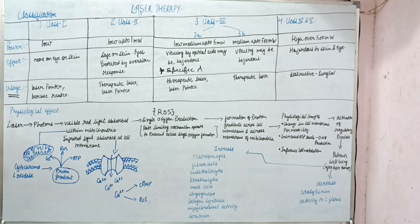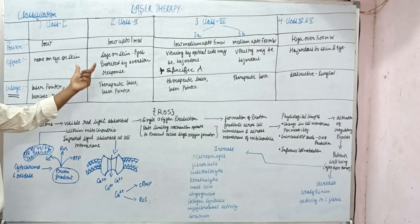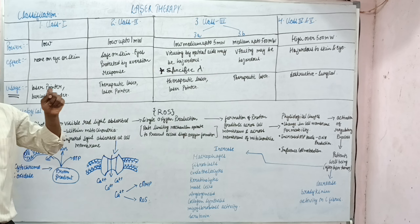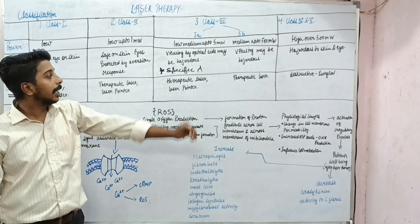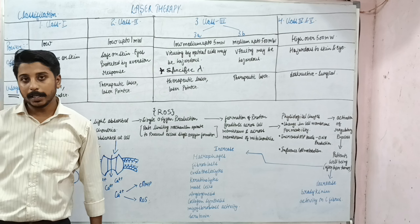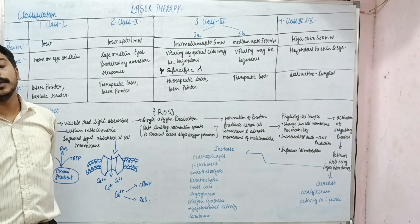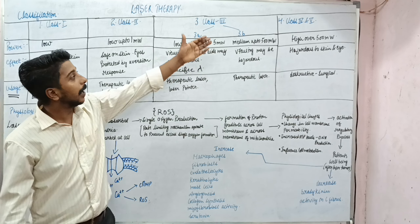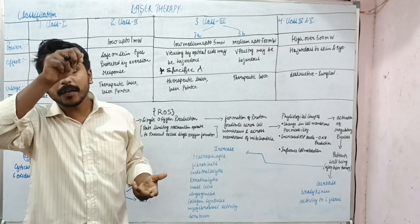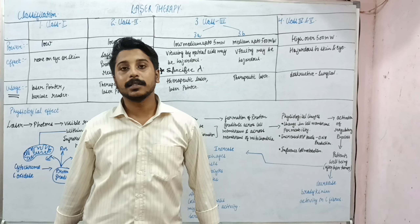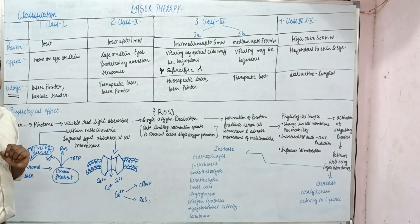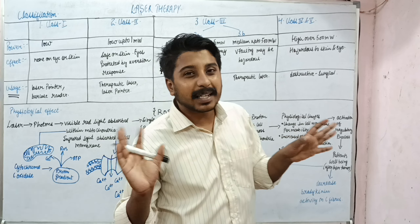Laser pointers and barcode readers are made using Class 1 laser. Class 2 has less therapeutic use and is used to produce laser pointers. Classes 3a and 3b are used as therapeutic lasers — the most commonly used in physiotherapy. Class 4 and 5 is the destructive type of laser used to give surgical incisions.